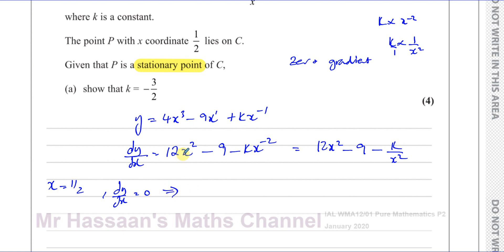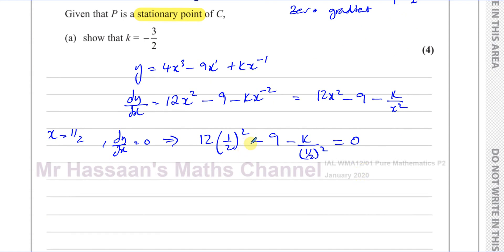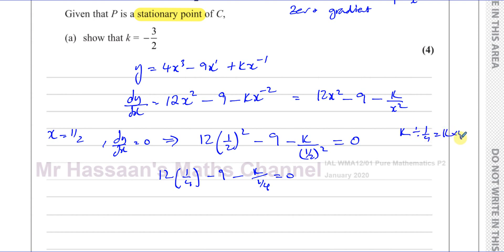Now I'll replace x with one half: 12 times one half squared minus 9 minus k over one half squared equals zero. That gives 12 times one quarter minus 9 minus k over one quarter equals zero. Now k divided by one quarter — when you divide by a fraction you multiply by its reciprocal — so k divided by one quarter is k times 4, which is 4k. The 4 cancels with the 12 to give 3, so we have 3 minus 9 minus 4k equals zero.